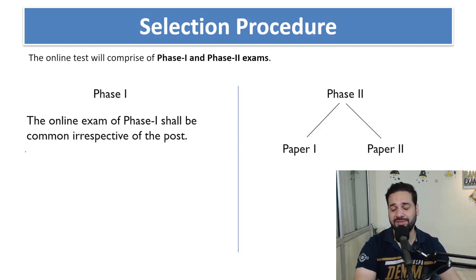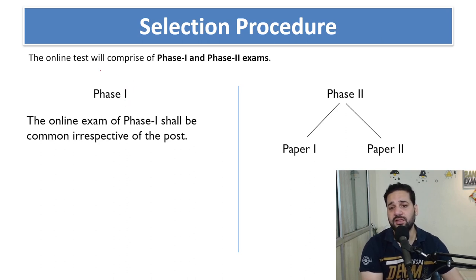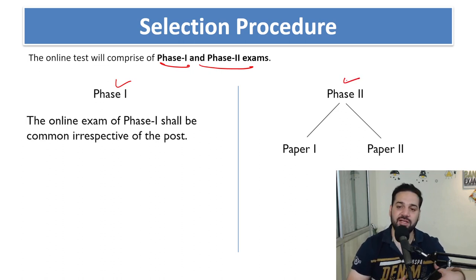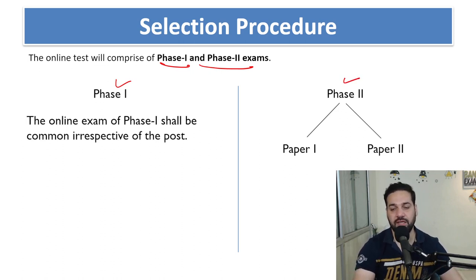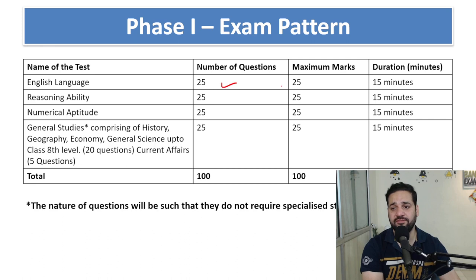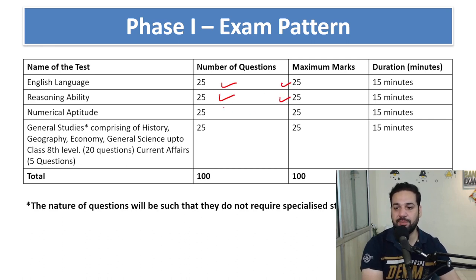There are a lot of vacancies, so you should start your preparations as soon as possible. The online test will comprise Phase 1 and Phase 2, which are almost similar but differ in difficulty level. In Phase 1 there is English Language - 25 questions, 25 marks; Reasoning Ability - 25 questions, 25 marks; and Numerical Aptitude - 25 questions, 25 marks.